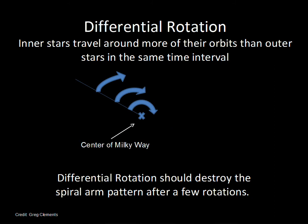Differential rotation has been covered in another video, but the principle is that material closer to the center of the galaxy takes less time for one orbit. Starting everybody at the same place on a line at time equals zero, the arrows show equal time of motion for three stars. Star one covers more of its orbit in a set period of time, star two a little less, star three a little less — this is differential rotation. If we had an existing straight line of gas and dust going out from the nucleus, this straight line would not survive.